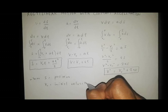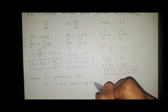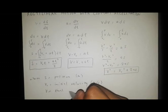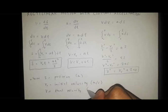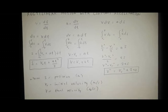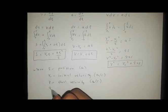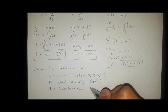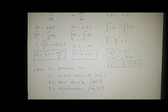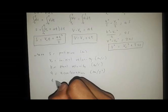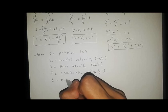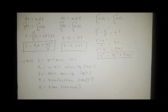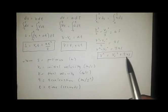Here, v₀ is the initial velocity in meters per second, v is the final velocity in meters per second, a is acceleration in meters per second squared, and t is the elapsed time in seconds. Those are the three equations for rectilinear motion with constant acceleration.